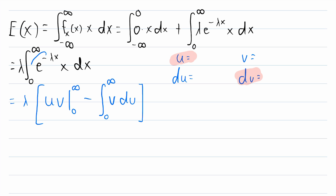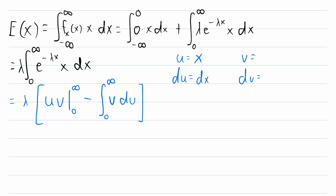The exponential function doesn't simplify much whether you integrate or differentiate it. However, this linear function x simplifies nicely when differentiated — its derivative is just 1 dx. So let's set u equal to x, giving us du = dx, and let dv equal e to the negative lambda x dx.